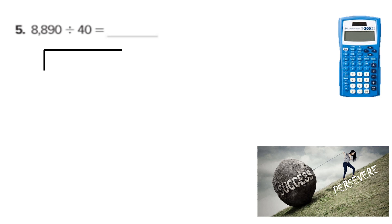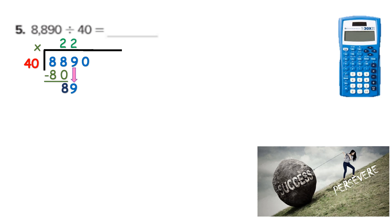What about 8,890 divided by 40? My first number, 8,890, is my dividend inside the box. My divisor 40 goes on the outside. Will 40 go into 8? No. Will 40 go into 88? Yes — 2 times because 2 times 40 is 80. I put that 2 above the second 8. When I subtract, I have a remainder of 8. I bring down my 9. We know 40 went into 88 twice, so it'll go into 89 twice as well — 2 times 40 is again 80 — and I bring down my 0. That's still close to 80, so 2 again. 2 times 40 is 80, and now I have a remainder of 10.